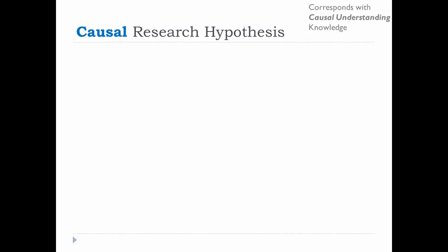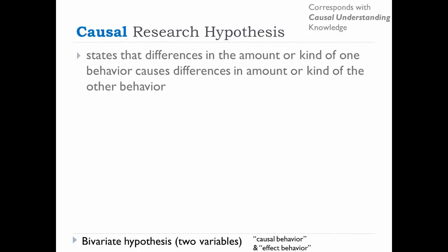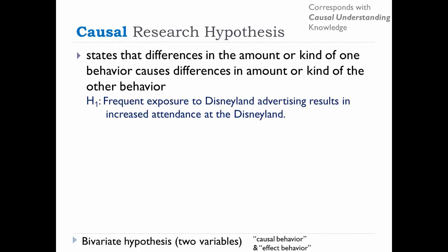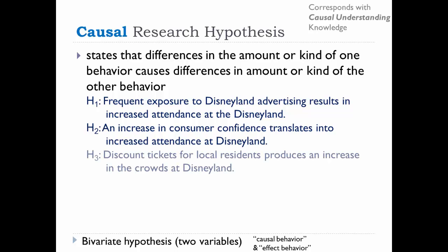The causal hypothesis is not the hardest to write, but definitely the most difficult to support. It involves a relationship between two variables, but a causal research hypothesis states that one variable is the causal behavior and the second is the effect behavior — a difference in the amount or kind of one behavior causes differences in the amount or kind of the other. For example, frequent exposure to Disneyland advertising results in increased attendance, or an increase in consumer confidence translates into increased attendance, or discount tickets for local residents produces an increase in the crowds at Disneyland.